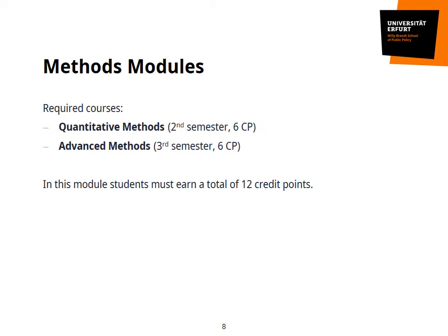You will have two methods modules: the quantitative methods lecture and exam in your second semester, and in your third semester — also meant as a preparation for your master's thesis — you will have an advanced methods class. Together, you will earn 12 credit points here.